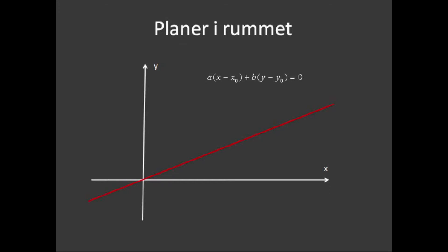Ligningen for linjen fandt vi ved hjælp af et kendt punkt, som vi kalder for P0, og en normal vektor, som vi kalder for N.